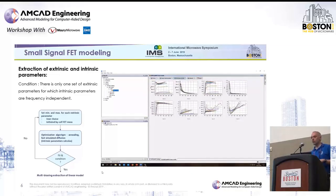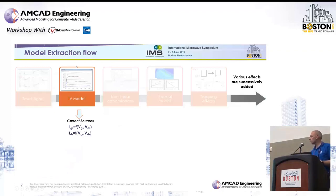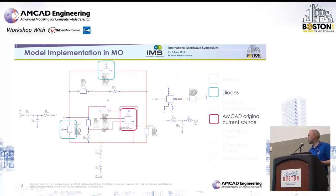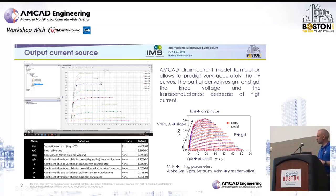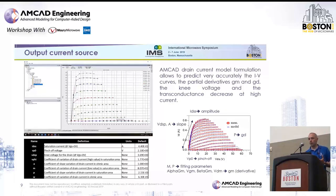We then need to go from the linear modeling step to the nonlinear modeling step. The first step is to extract the equivalent IV model — the current sources IGS and IDS. We also extract the model for the input diodes. We propose our own current source model, whose formulation is very beneficial because it enables accurate determination of the IV characteristic plus its derivative. Different parameters can be tuned to optimize the current source behavior.